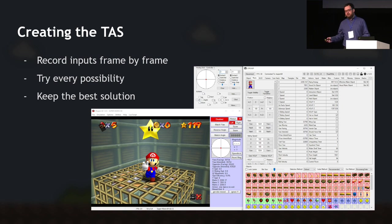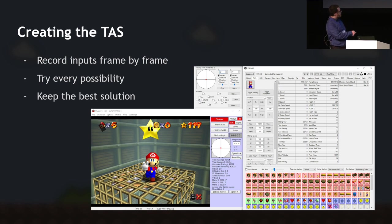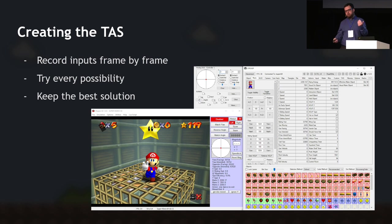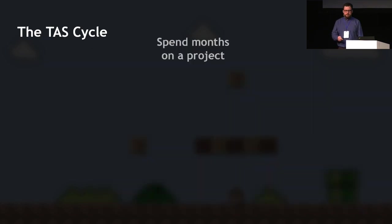Once you've done your planning, the next step is actually creating your TAS — the tedious part. You play the game frame by frame, advancing by the single smallest unit of time the game runs at, usually 30 or 60 frames per second. Your workflow looks like this: you've got your emulator with advanced input controls, you input any joystick position and button press, advance by one frame, see what happens, go back with save states if you don't like it, and repeat to try every possibility and keep the best solution. Your memory watch gives you every piece of information you might need.